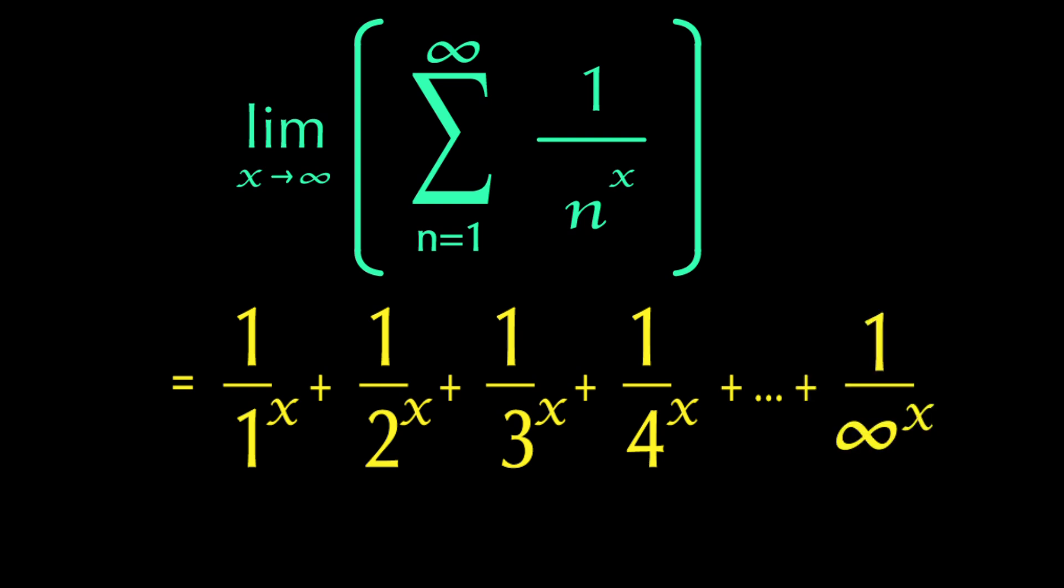This would be a ridiculous equation if it wouldn't be for this other infinity here. So x approaches infinity. Which means we can basically just kind of replace all these with infinity. This first term is just one to the infinity. Making this into you guessed it. One. Making the whole thing just one.